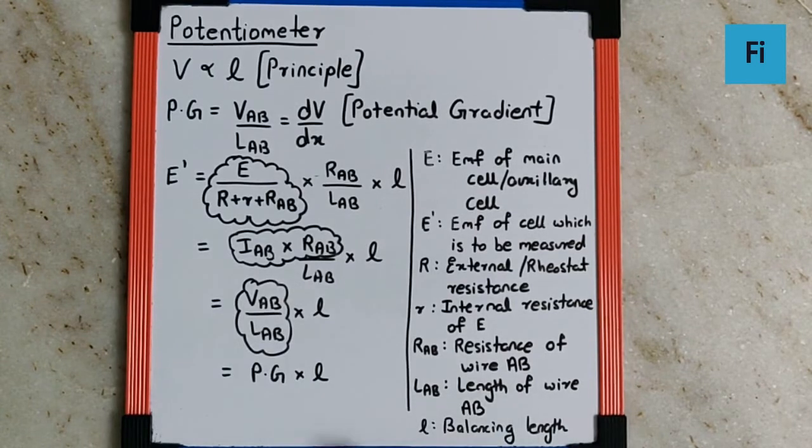And LAB is the length of wire AB, whereas the small l is the balancing length, the length measured generally from A. So these are the important points.